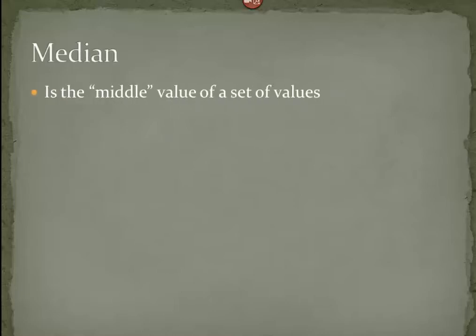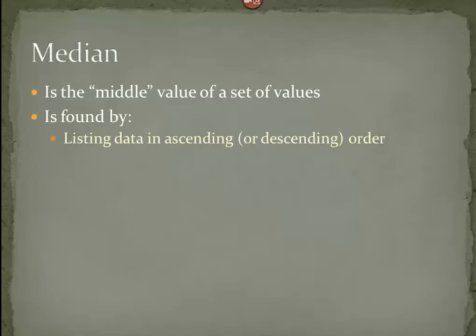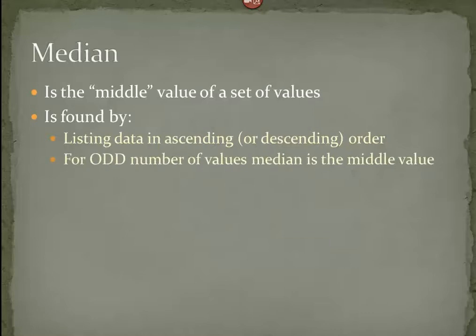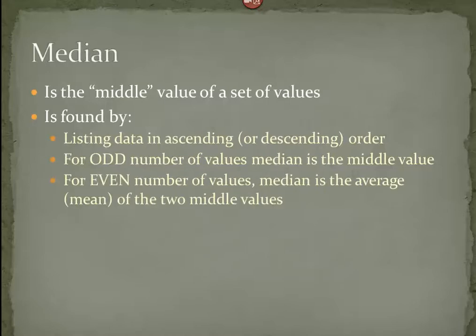The median, on the other hand, is another way to measure the central tendency of the data. The median is literally the middle value of the set of values. The way we find it is to first take our data and list it in ascending or descending order. For an odd number of values, the median is the number in the middle. For an even set of values, there are two numbers in the middle, so we take the average or mean of those two middle values — and that average is the median.